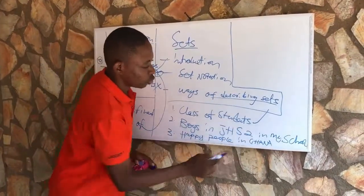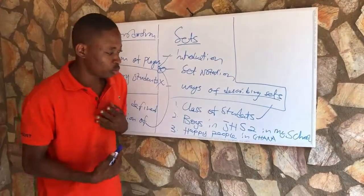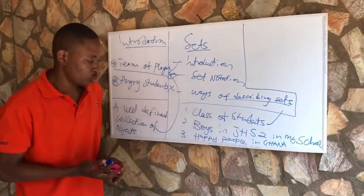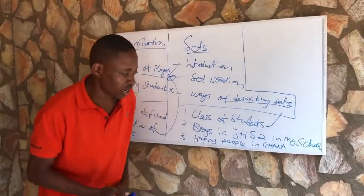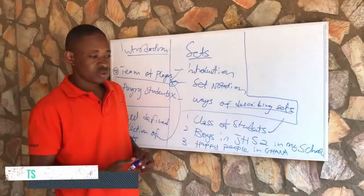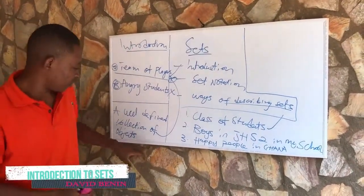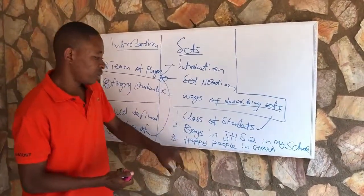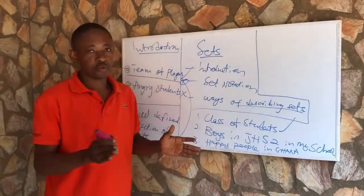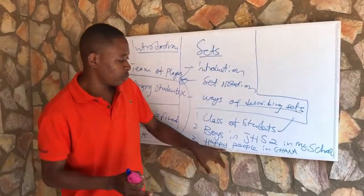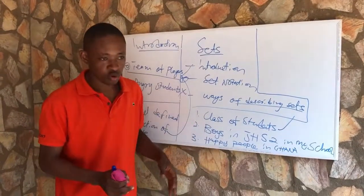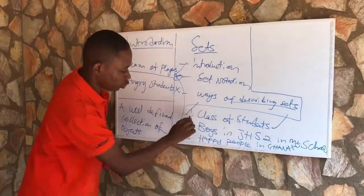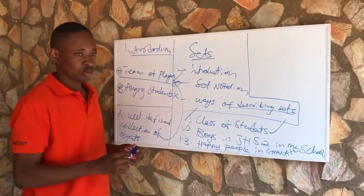Boys in JHS 2 in my school: if you come to my school, you can clearly identify the boys that are in JHS 2. But happy people in Ghana cannot qualify to be a set based on our definition of a well-defined collection of objects, because we don't have any clear criteria or rules for describing which people would be qualified as happy people in Ghana. Therefore, examples one and two qualify to be sets, but example three does not.